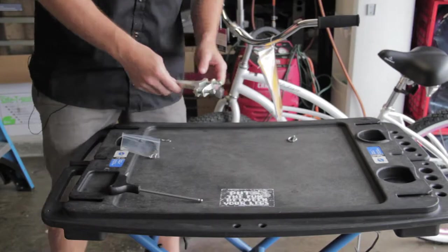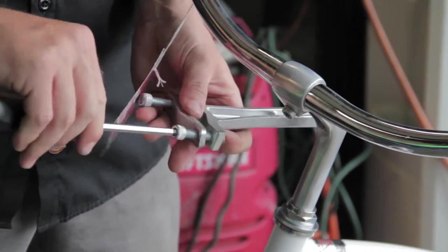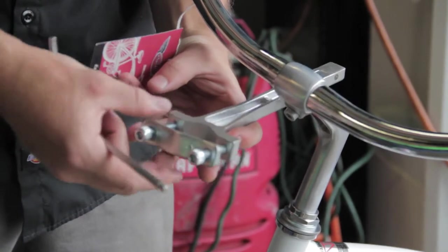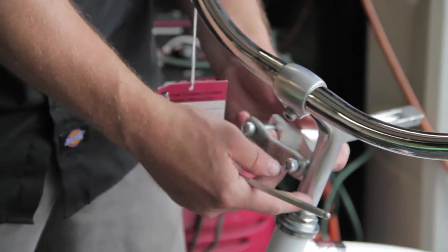Mount the mounting bracket to the bicycle stem. So first step here is to remove these Allen screws and separate this piece of the bracket from this piece of the bracket so that we can wrap it around the stem.